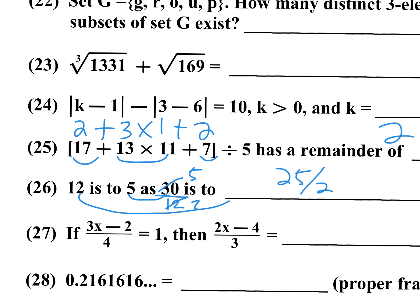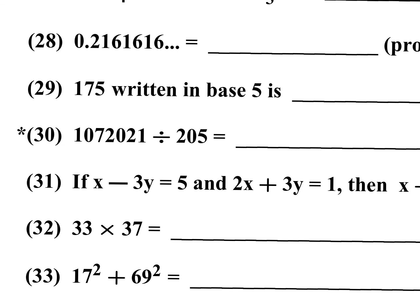For number 23: the cube root of 1,331 is 11; the square root of 169 is 13. Add those together — that's 24. For number 30, an approximation: divide by 205, which is close to 200. The last two zeros handle the last two decimal places, so take 10,720 divided by 2: 10 divided by 2 is 5 and 720 divided by 2 is 360, giving approximately 5,360 as a good answer.